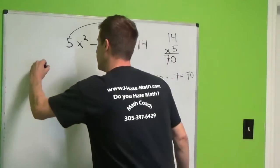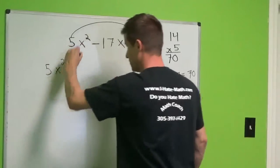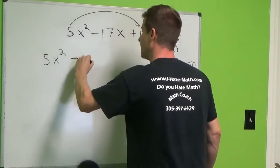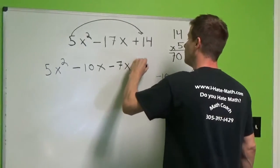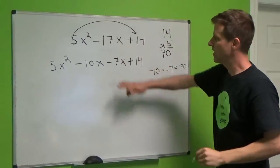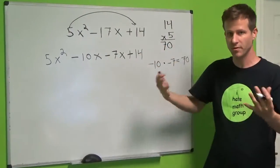We're going to rewrite the problem. 5x squared, which I just brought down, negative 10x, negative 7x, plus 14, which I just brought down. This is equal to this. I just rewrote it.